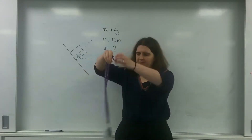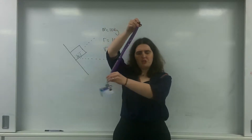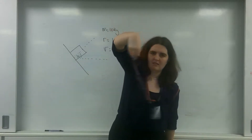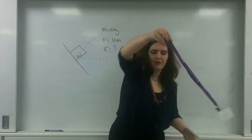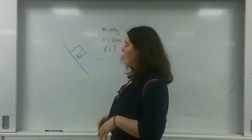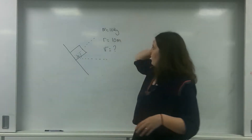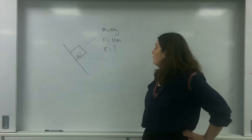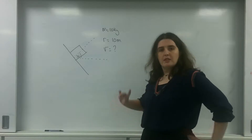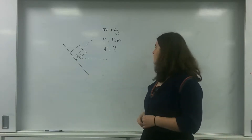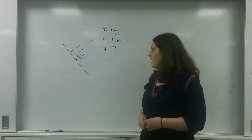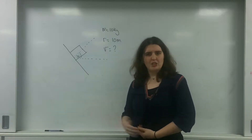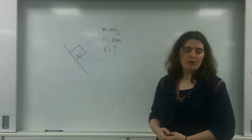The mass of the car is 10 kilograms, the radius of the velodrome is 10 meters, and I want to know what my velocity will be — my tangential velocity at any point.